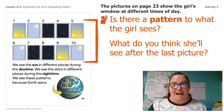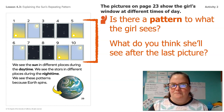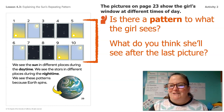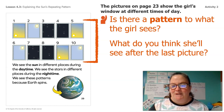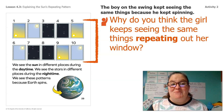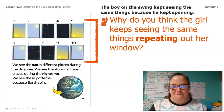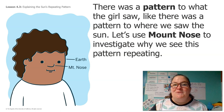We see the sun in different places during the daytime. We see the stars in different places during the nighttime. We see these patterns because the Earth spins. Let's take a closer look at this last page. Do you see a pattern to what the girl sees? See how they have them numbered — 1 through 10. What do you think she's going to see after picture number 10? She would see the stars. There was a pattern to what the girl saw, just like there was a pattern to where we saw the sun.